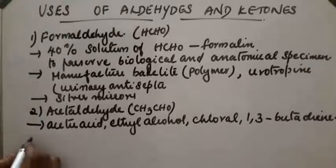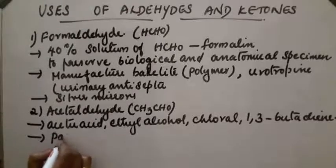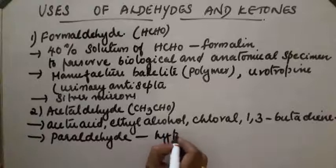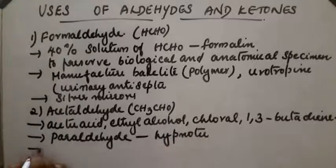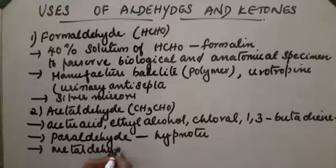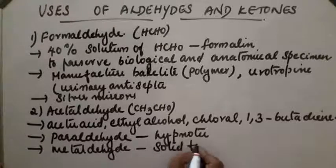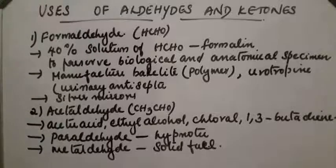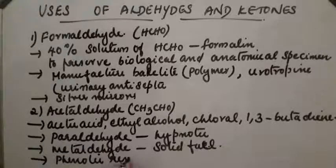Acetaldehyde is used to prepare paraldehyde, which is a hypnotic. It is also used to prepare metaldehyde, which is a solid fuel. Additionally, it is used to prepare phenolic resins, dyes, and drugs.